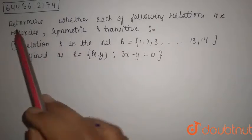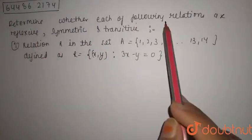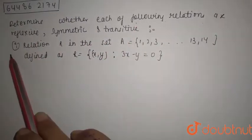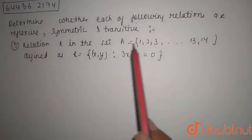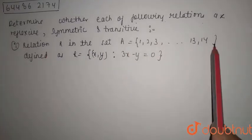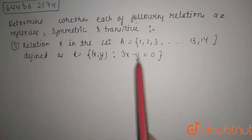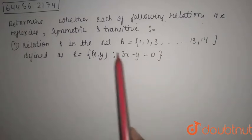Hello students, today's question is: determine whether each of the following relations are reflexive, symmetric and transitive. Given as relation R in the set A: 1, 2, 3 and so on up to 13, 14, defined as R equals x, y where 3x minus y equals 0. This is the relationship between x and y.